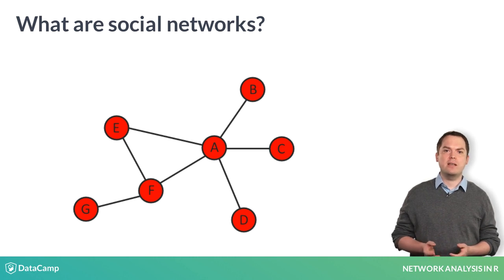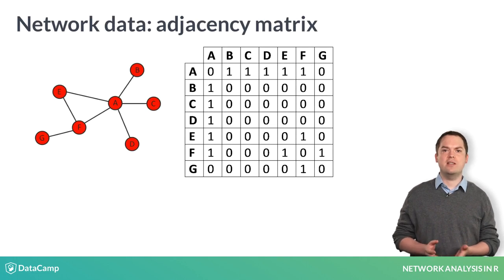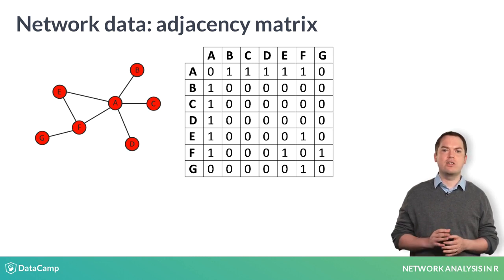The network visualization is based upon underlying data that can be represented in two structures. The first is what is called the adjacency matrix. Here, we have a matrix with our vertices in rows and columns. Where there is a 1 in a cell, this indicates that an edge exists between those two vertices. A 0 indicates that there is no edge present between those two vertices.